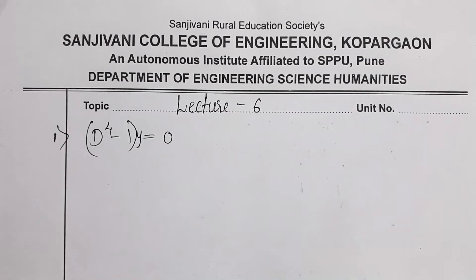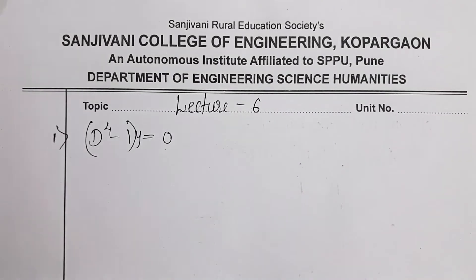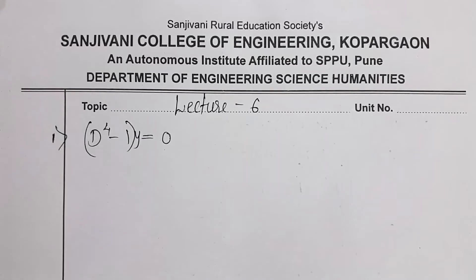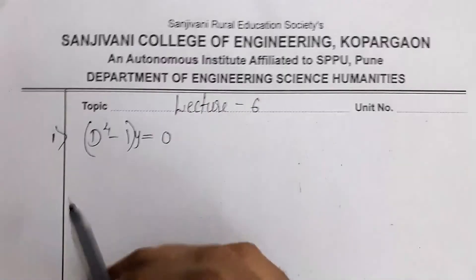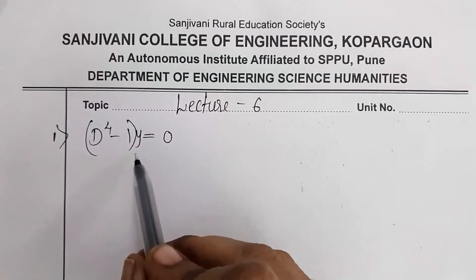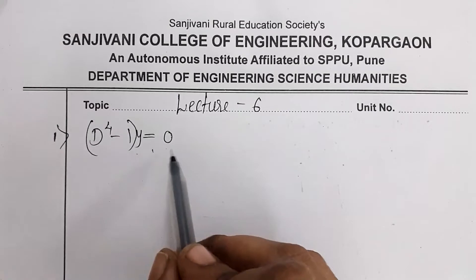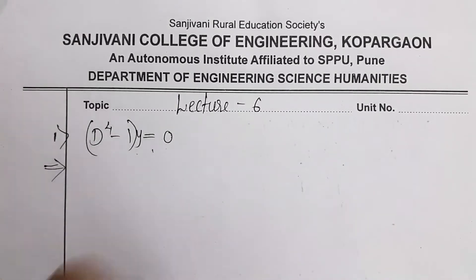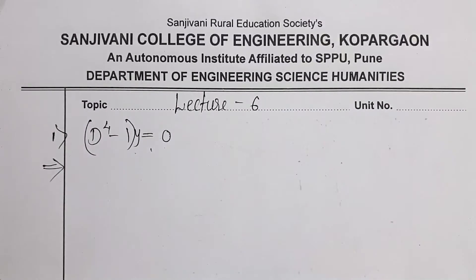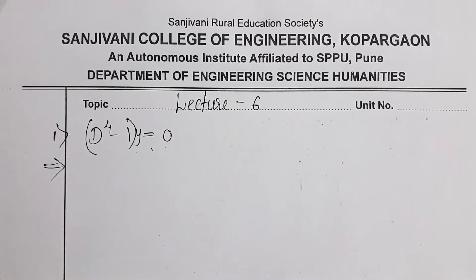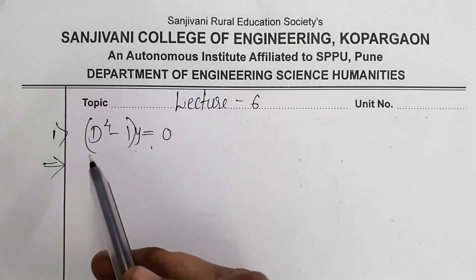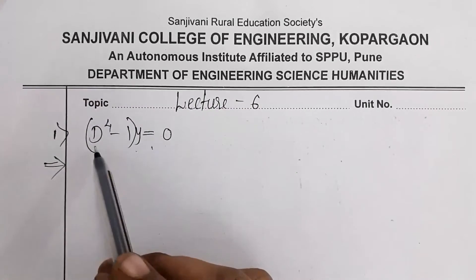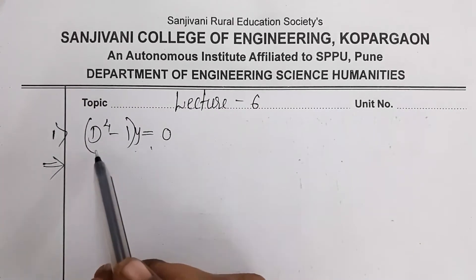Hello all, welcome to lecture number 6 of higher order differential equations. The first example is (D⁴ - 1)y = 0. In previous lectures we have seen how to find roots for cubic and square equations. Today we are going to see how to find roots for a fourth order equation.